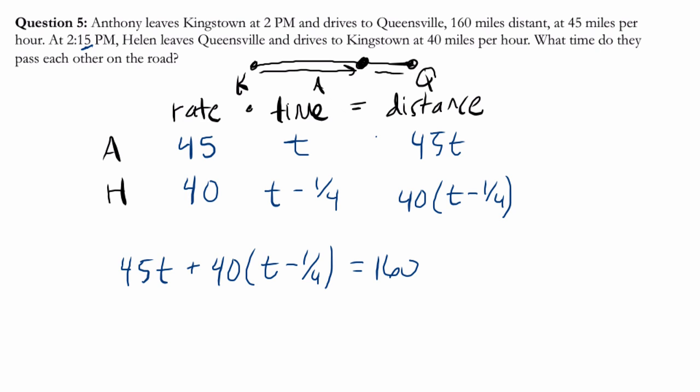Well, she's got to go some distance as well to get there. But if we add these two distances up, it's always going to be the full distance between Kingstown and Queensville. It's always 160. Anywhere you go is the total distance.